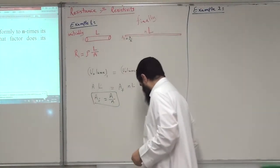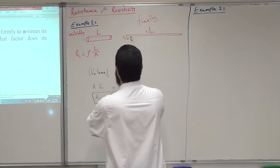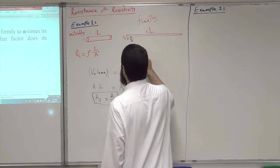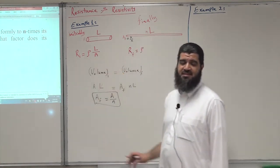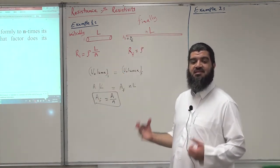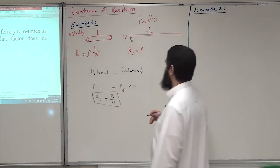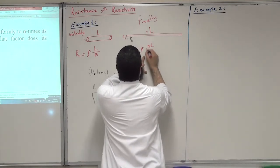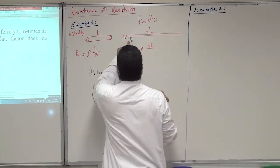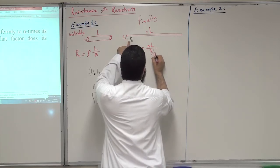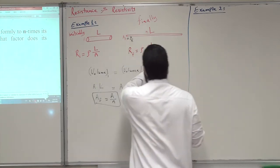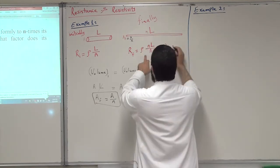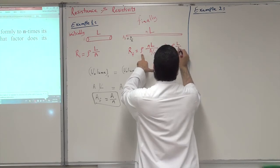To find R_final, we use the formula: R_final equals rho — the same rho, because it is the same material, the same wire — multiplied by the length nL, divided by the cross-sectional area which is A divided by n. This n moves to the numerator and we end up with n² multiplied by rho·L divided by area.